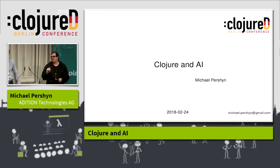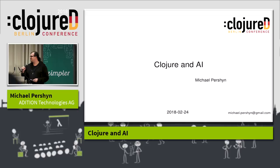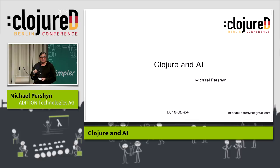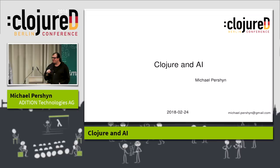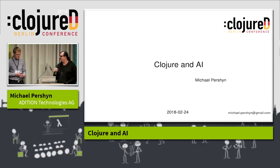Our next speaker is Michael Pershin. He has over 10 years of experience as a software engineer, and he wants to talk about Lisp and AI. Common Lisp was once the largest AI language and got sacked with the drop in AI technology. But AI is back, and Clojure is a Lisp dialect, so he will tell us about Clojure and AI. Please welcome him.